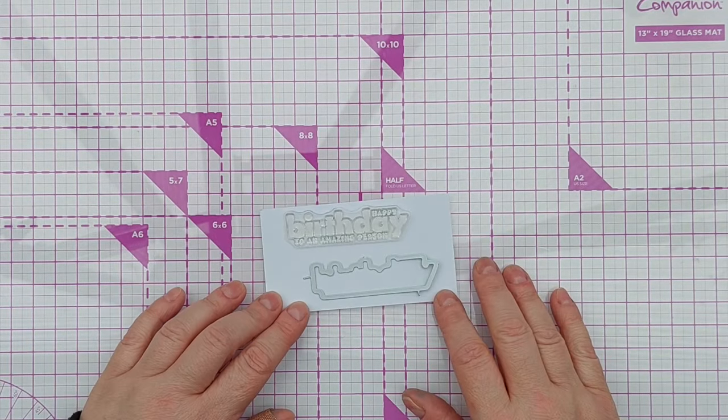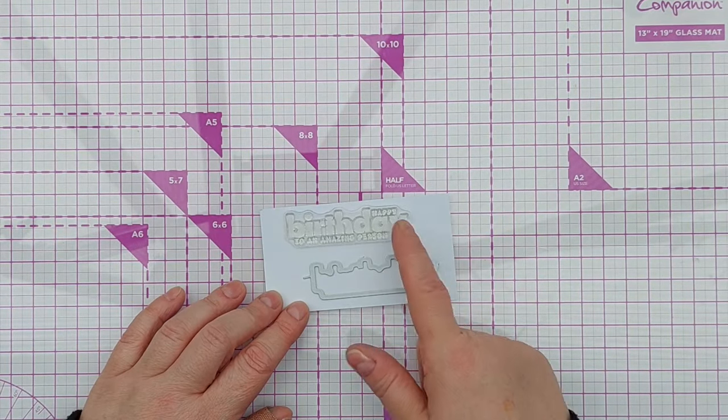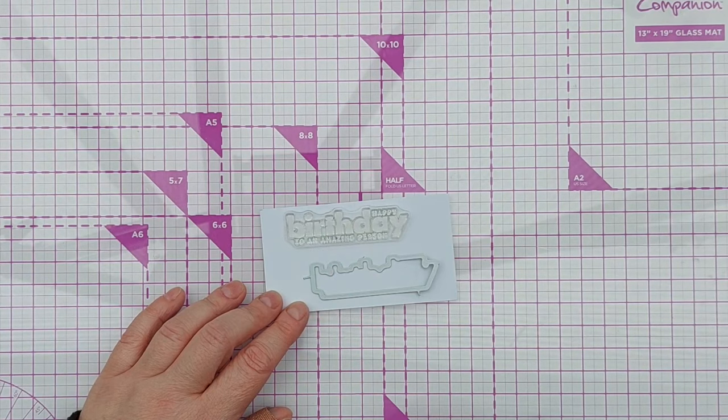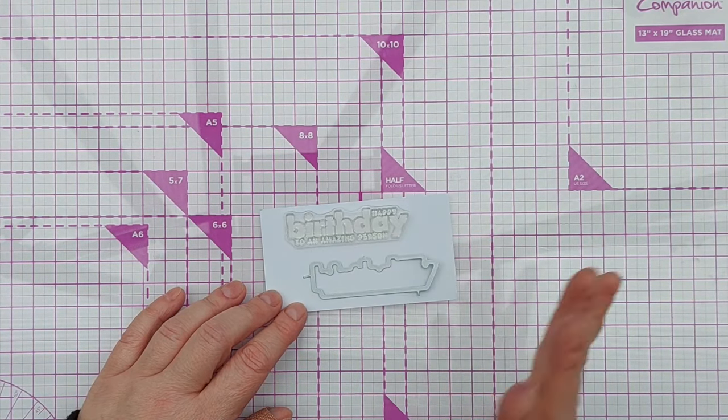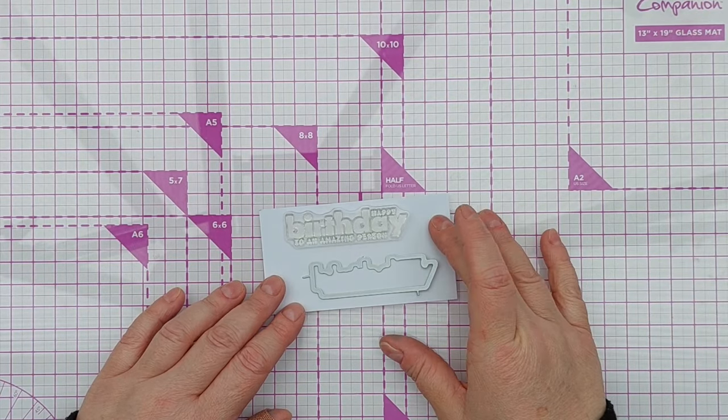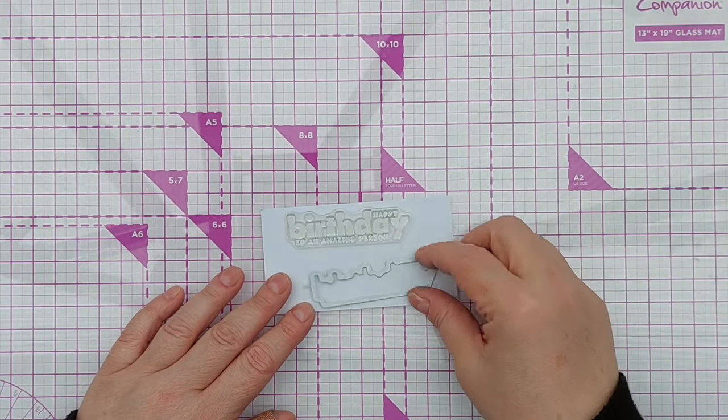So this is the stamp and the die that I'm going to use today. It says happy birthday to an amazing person. It's a silicone stamp that came from a relatively cheap set that I bought on Amazon. It was a stamp and the die set together.